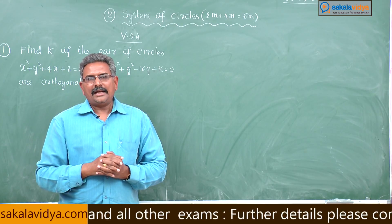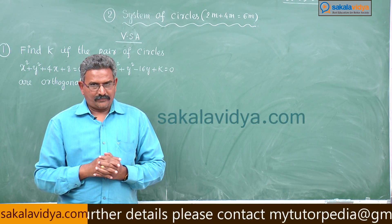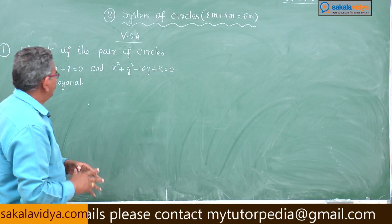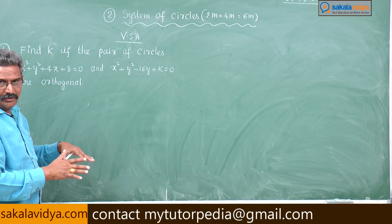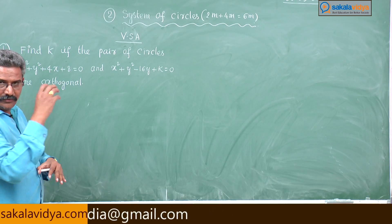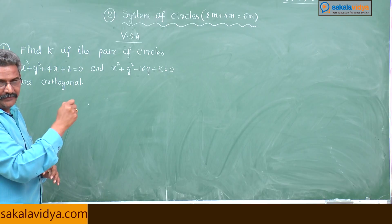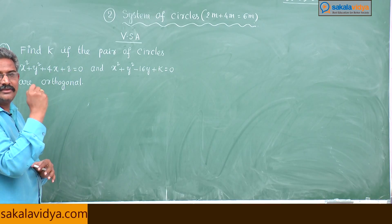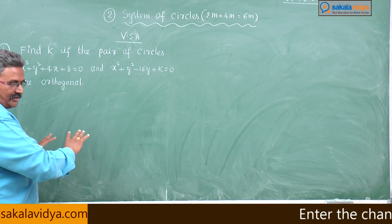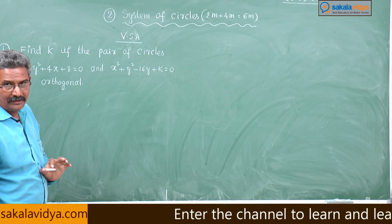Do not worry, I will explain. What are the terms involved in that condition? First, let us write the circles: one is S = 0, other is S' = 0. From that, g, f, c values and g', f', c' values, let us write the condition. Let us substitute the constant value, k can be evaluated.